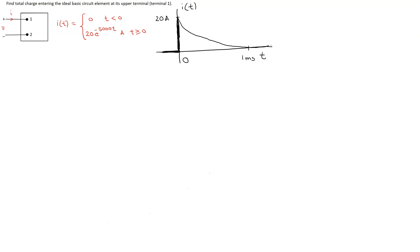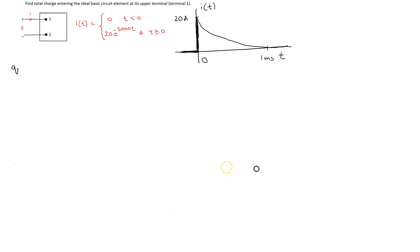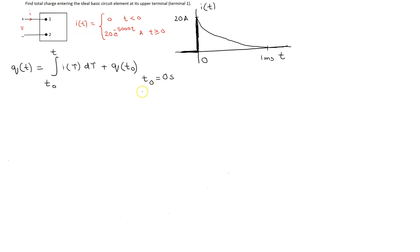Now we have to find the total charge entering the ideal basic circuit element, so we use the basic equation relating charge and current. The charge is given by integrating the current from t0 to t, plus the constant of integration which is the initial charge at time t0. For this problem, t0 is 0 and the element is initially uncharged, so the initial charge is 0 coulombs.